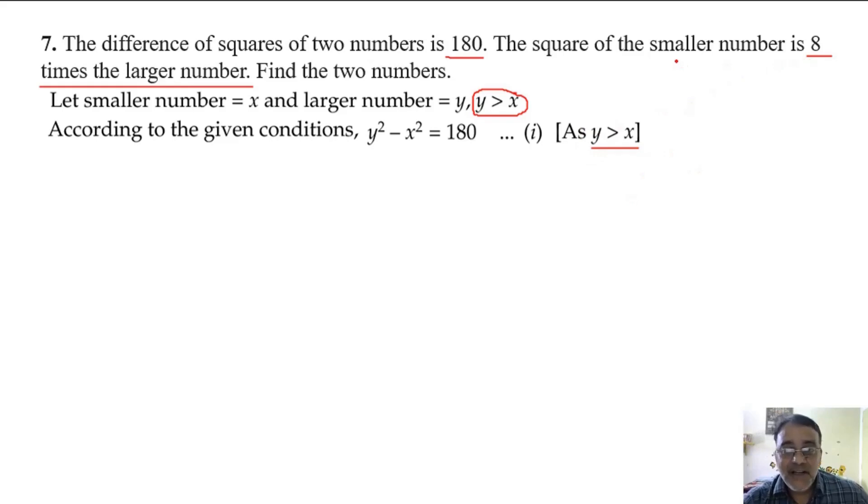And smaller number, square of smaller number that is x square is 8 times the larger number, 8 into y. So x square is equal to 8y. This is the second condition.